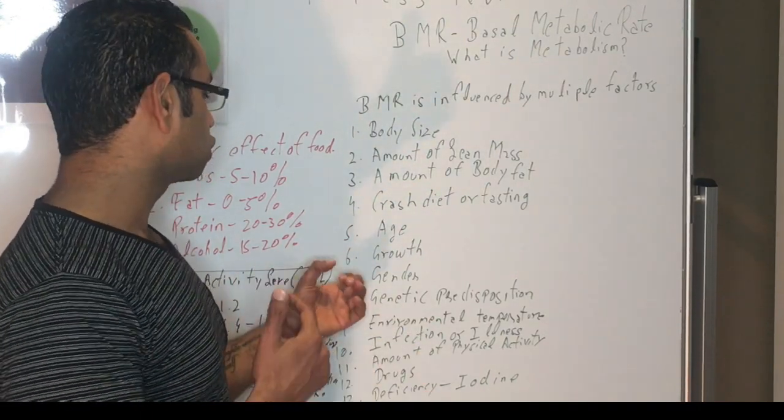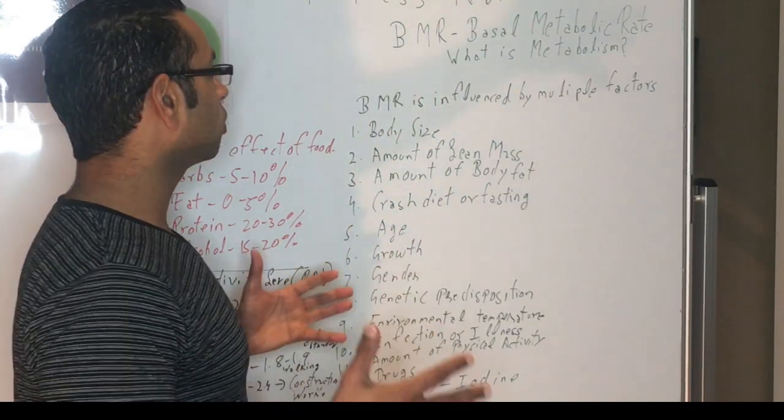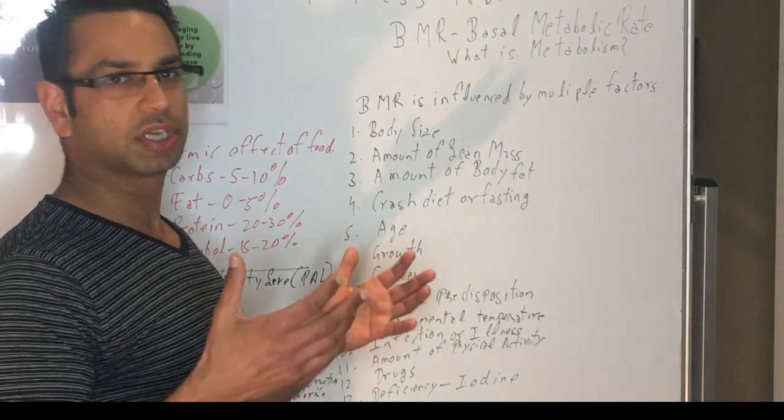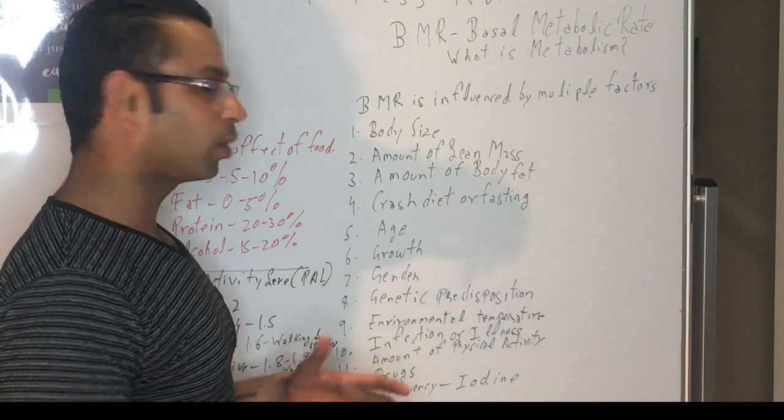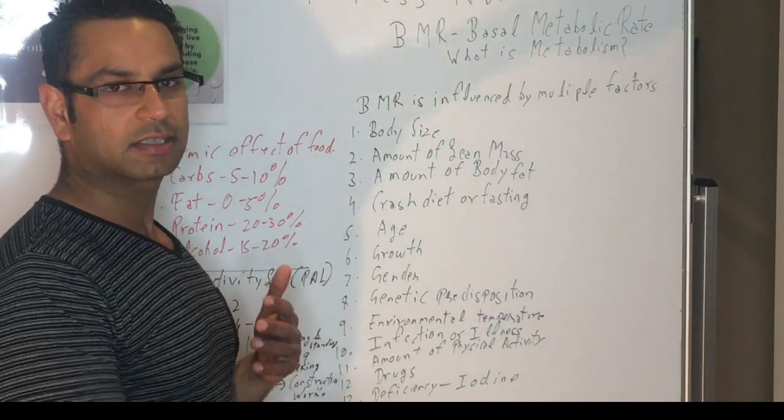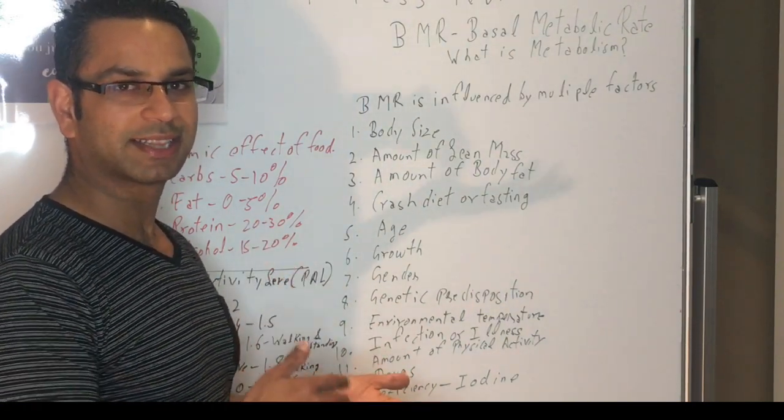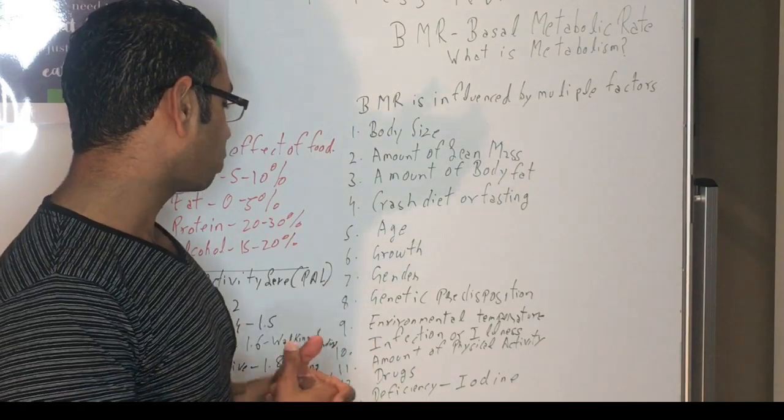The sixth one is growth. So in childhood because they're growing, or any adults if they're going to the gym and putting on muscle mass, your BMR will be higher. The seventh one is gender—males tend to have higher BMR than females. The eighth one is genetic predisposition.